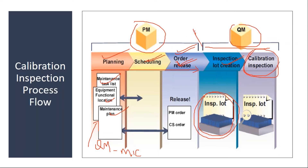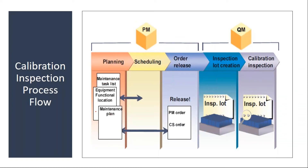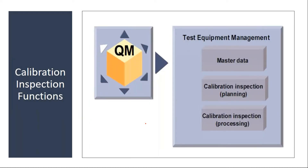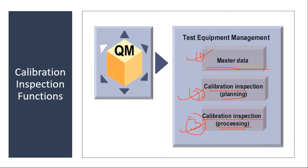So basically it is an integration between PM and QM modules. You need to coordinate with your Plant Maintenance consultant, as most of the master data will come from the PM side. In this calibration inspection function, first we will be creating all the master data required, then the calibration inspection planning activity, and then the processing — once the order gets generated along with the inspection lot, you will do the processing of the calibration inspection.